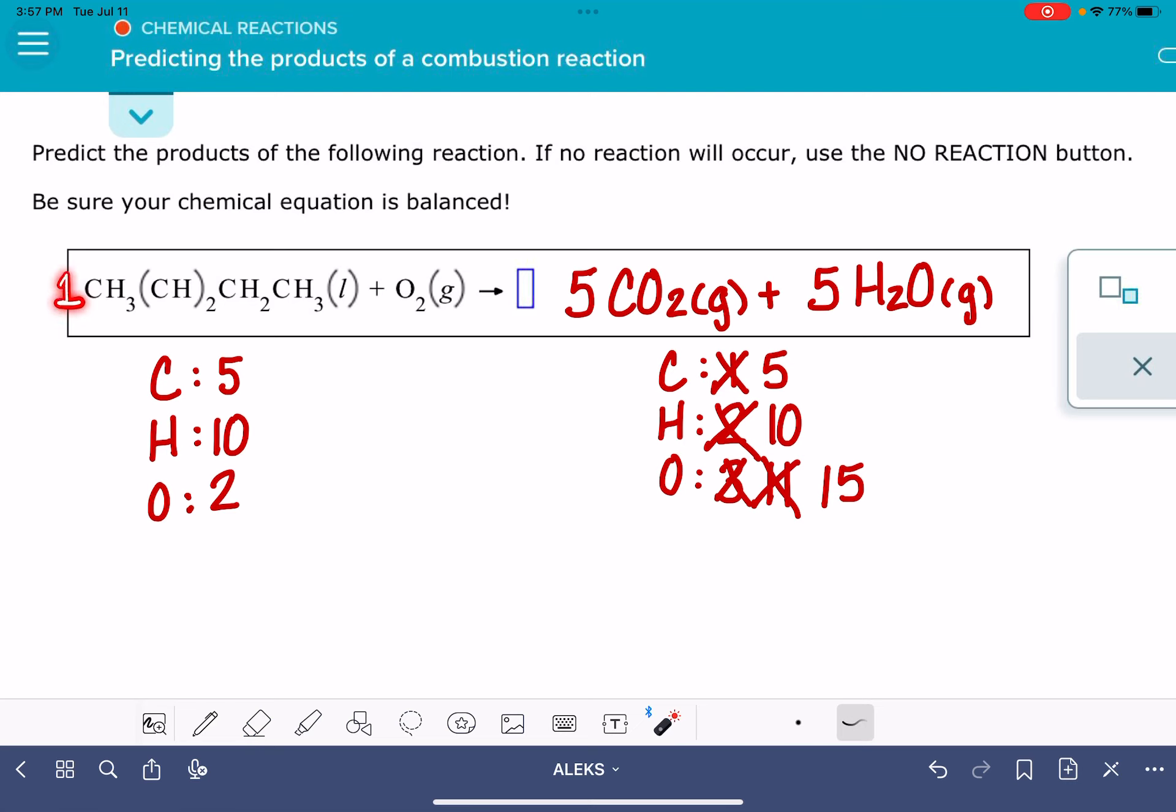So right now I have a coefficient of 1 in front of this hydrocarbon. I'm going to change it to 2. The coefficient in front of the O2, I'm going to change that to 2 as well. The 5, I'm going to double it to 10. The 5, I'm going to double it to 10. Remember, what we're doing is doubling everything. So now I'm doubling all of the number of atoms that I have on the left side and also the right side. Everything is just being doubled.